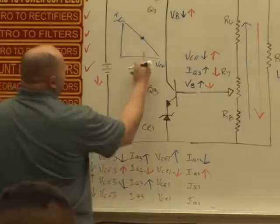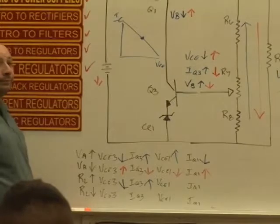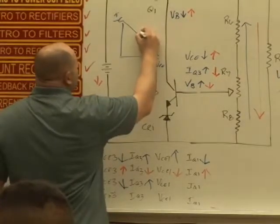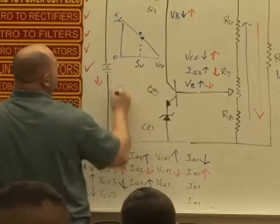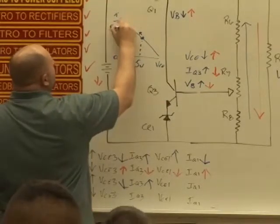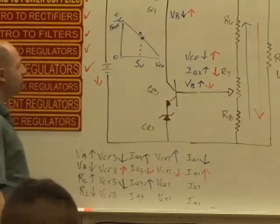If the transistor conducts more, which way are we going? We're going this way. Here, let me put five volts here. Zero's over here. I'll use five milliamps as saturation, the max saturation current. There's Q.